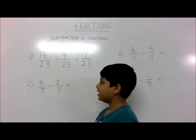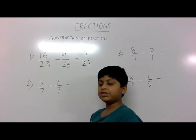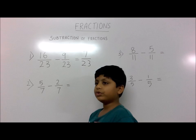Second question: 5 by 7 minus 2 by 7. 5 minus 2 is 3, so the answer is 3 by 7.